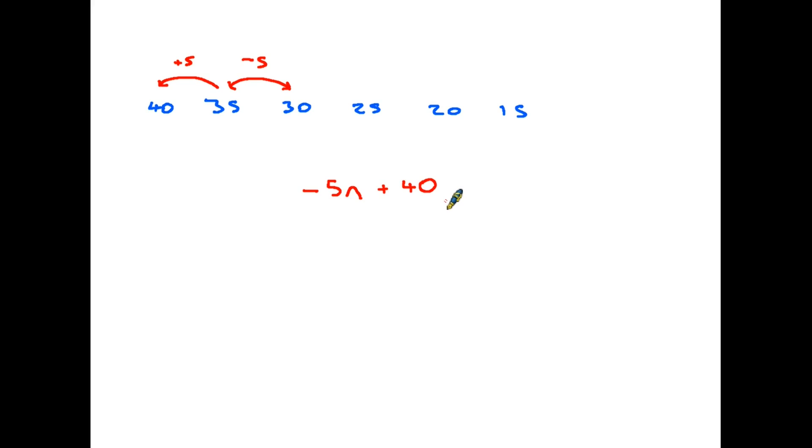So the rule for this particular sequence is minus 5n plus 40. Now if you're going to write this it's okay but actually in maths we don't like starting something with a minus. So we would generally turn that round and we would say 40 minus 5n.